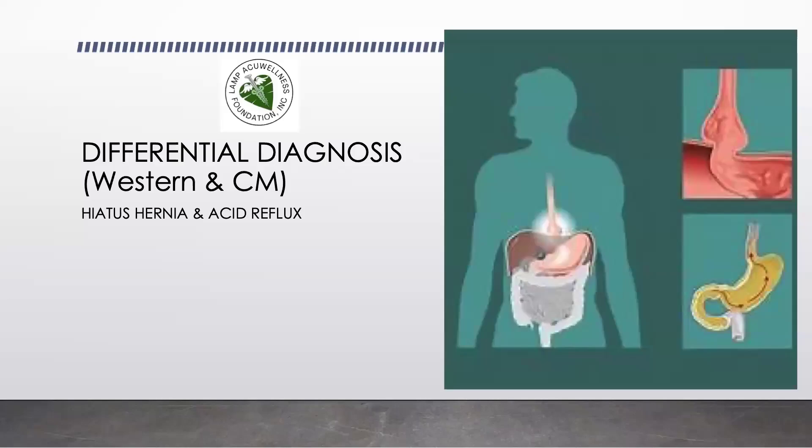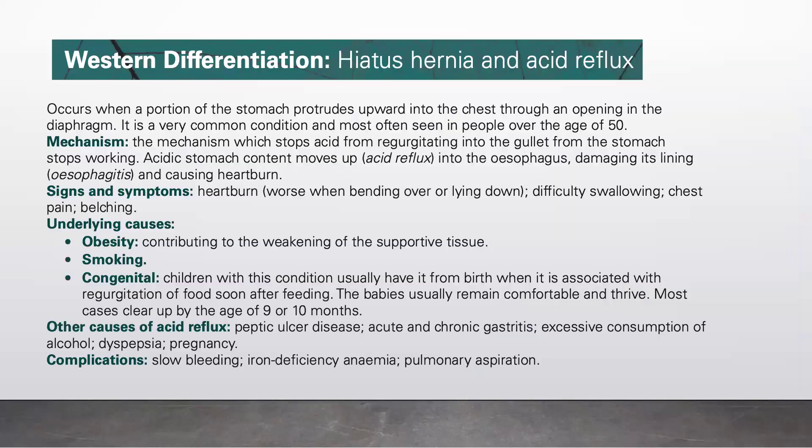We go to differential diagnosis for hiatus hernia and acid reflux. Let's start with the Western differentiation. Hiatus hernia occurs when a portion of the stomach protrudes upward into the chest through an opening in the diaphragm. It is a very common condition and most often seen in people over the age of 50.